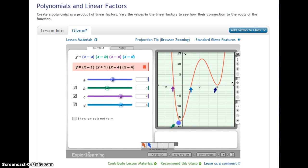And we do have a y-intercept down here, but we're not exactly sure what that value is. So let's show the unfactored form. We can see the y-intercept is at negative 16.